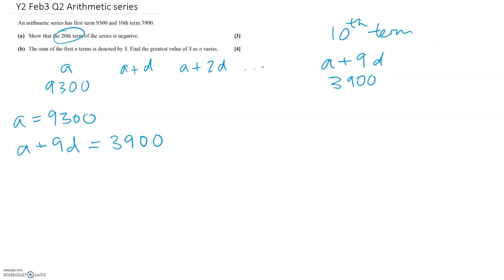So we know that a plus 9d equals 3900. So if we can find the twentieth term, if that turns out to be negative, then we've answered part a. Let's just stick that in there, and we'll get 9300 plus 9d equals 3900. And so 9d equals 3900 minus 9300.